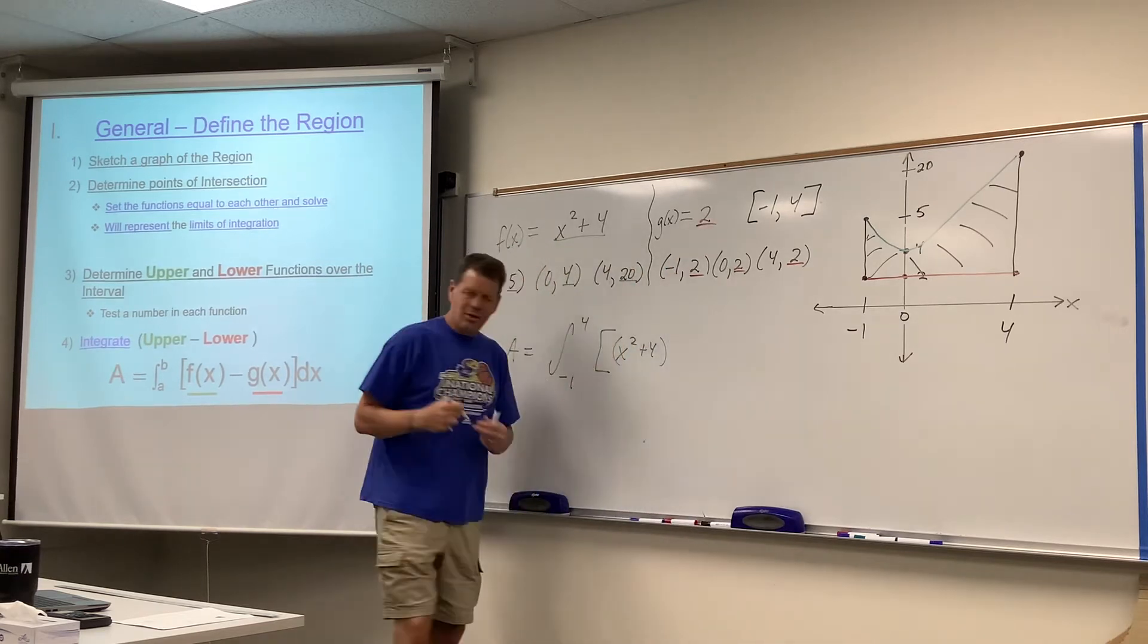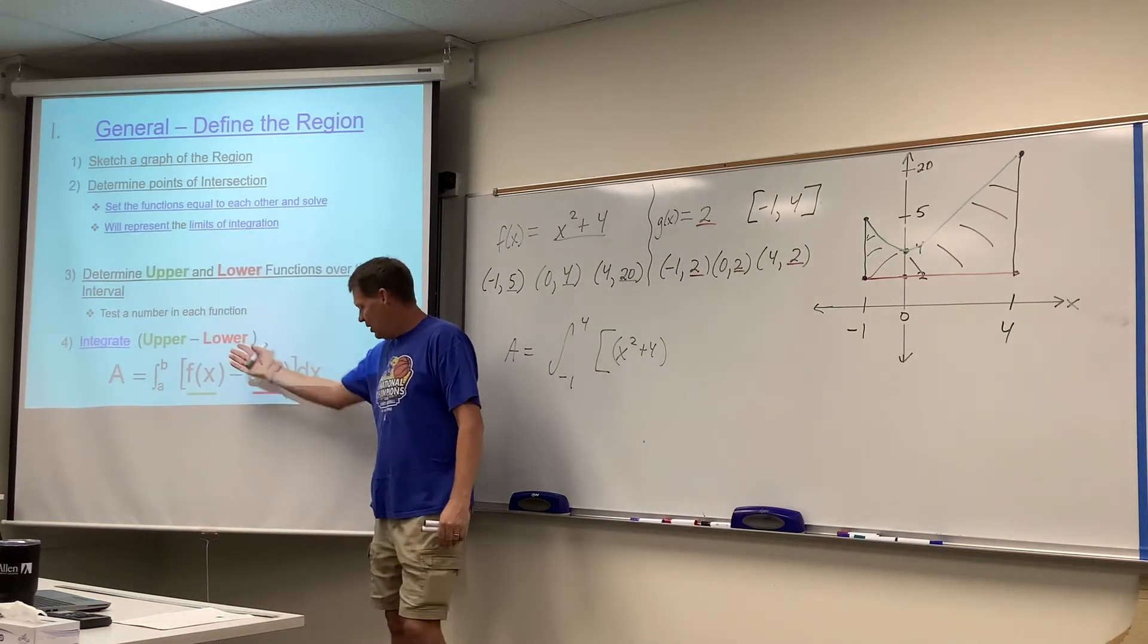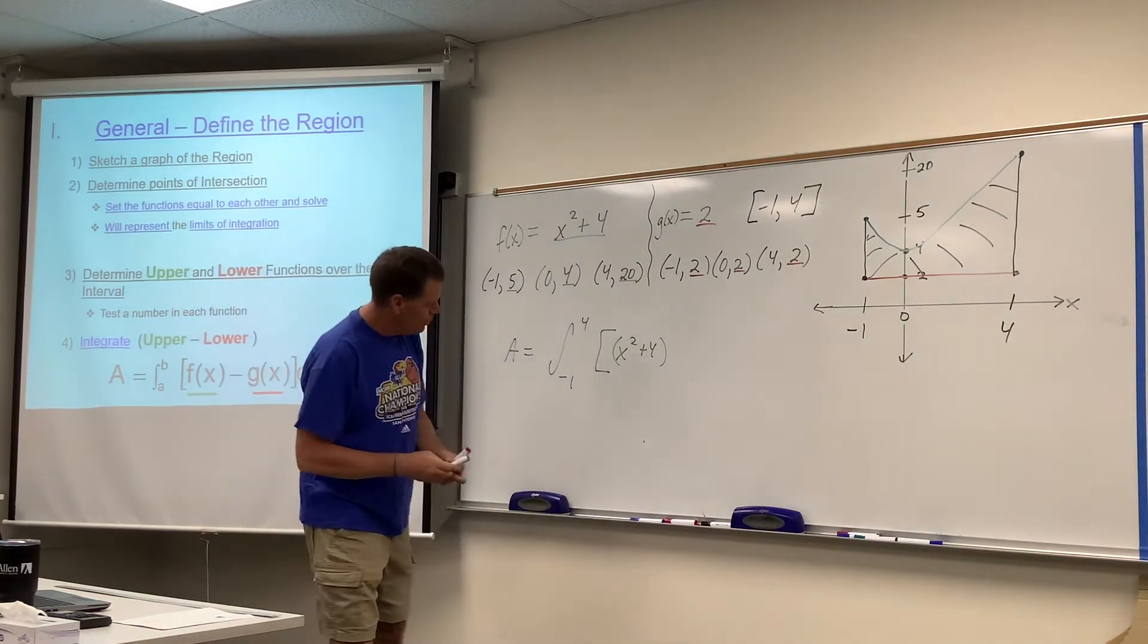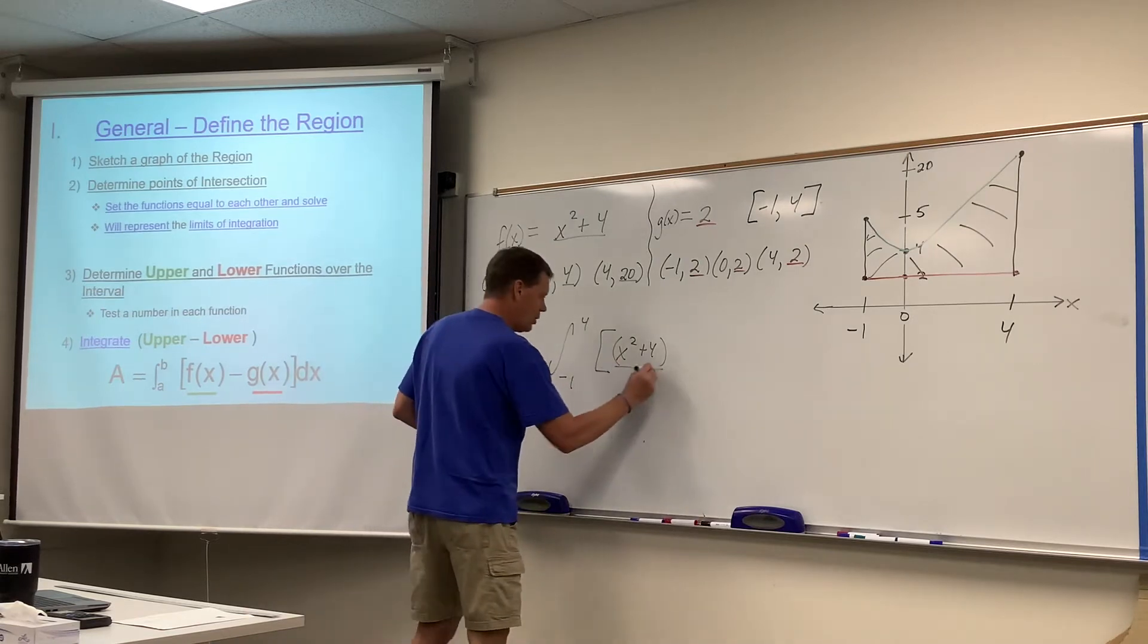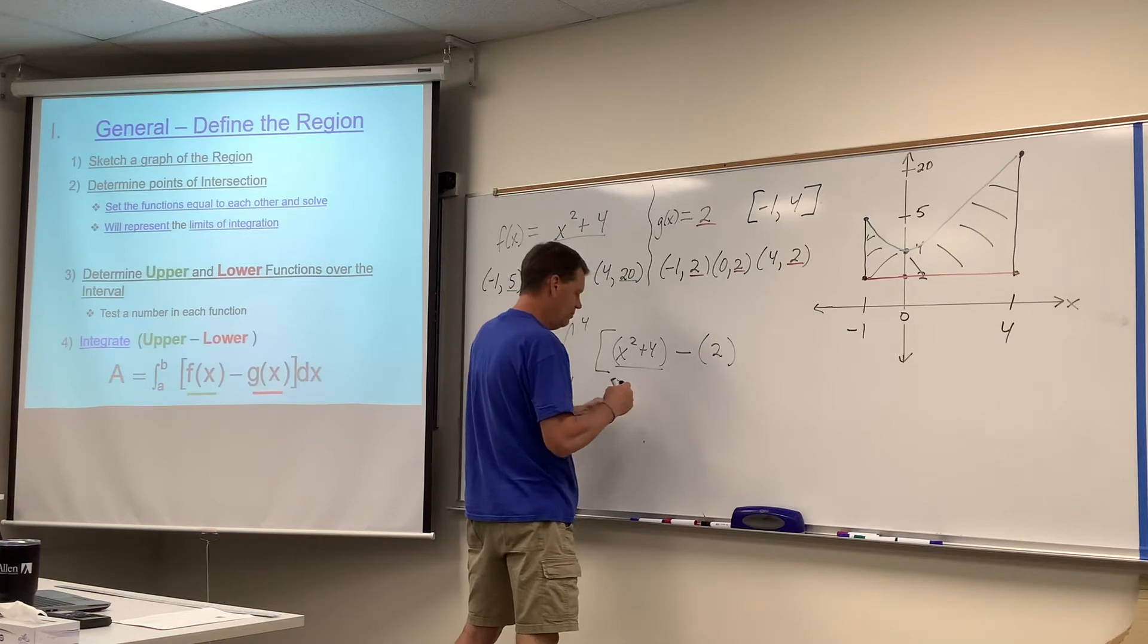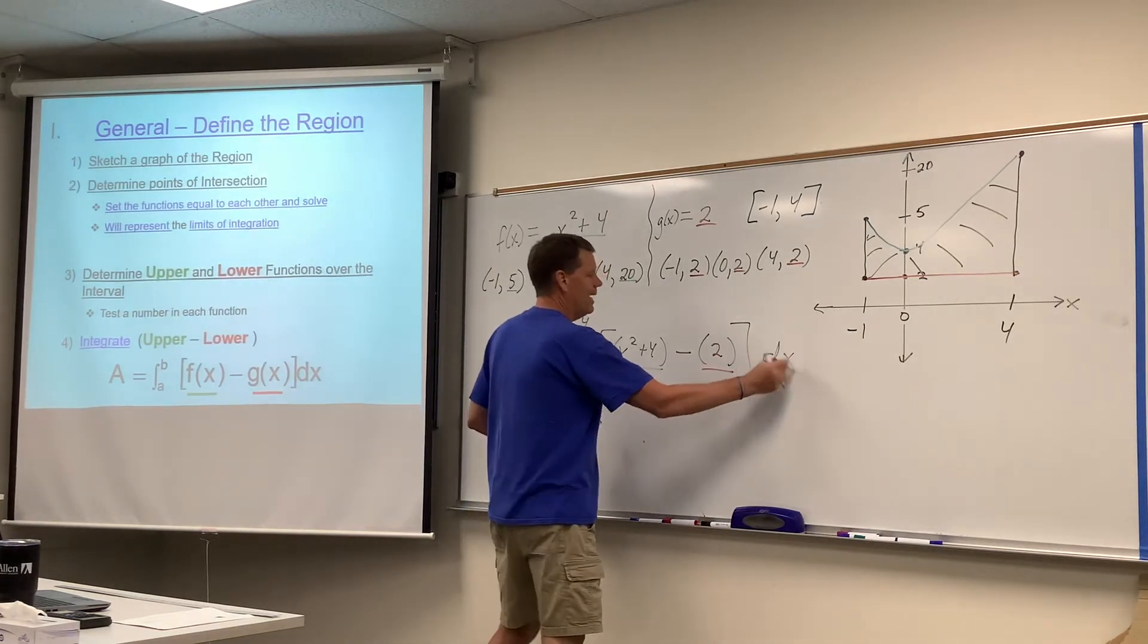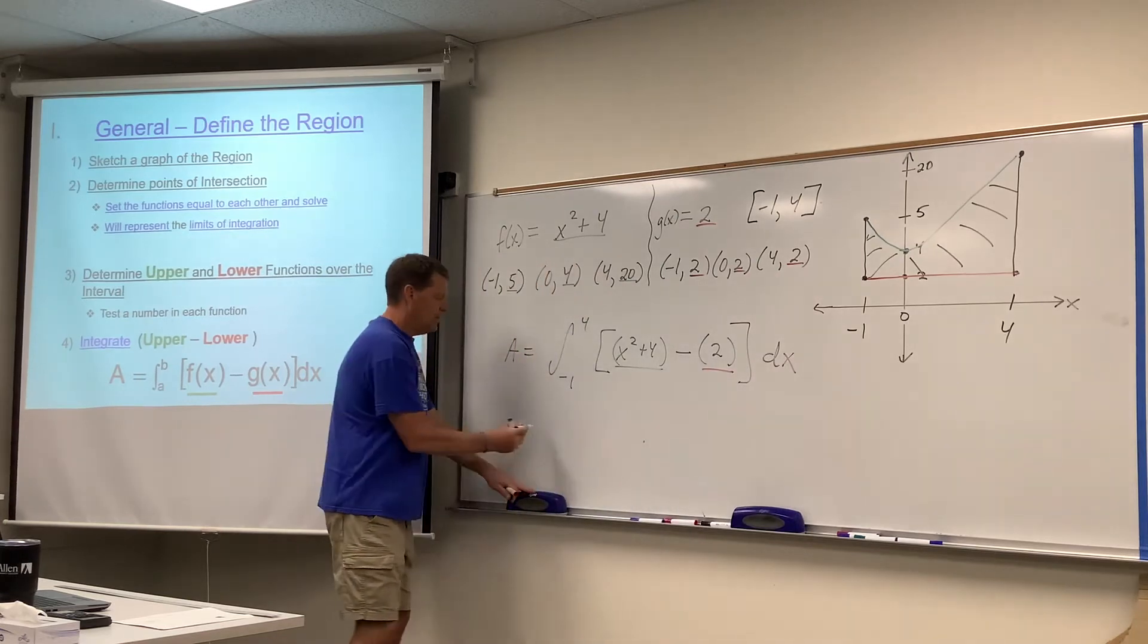And, you know, F of X green, G of X red. Colors don't matter. I'm just trying to make them match the notes, and I hope you can see the colors on the board, and you'll see the colors in the notes that were uploaded to you. And so we're taking that upper curve, we're subtracting from it the lower function, which really isn't a curve, it's a line. And with respect to X, mechanical. Here we go.